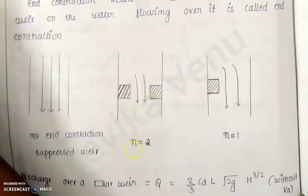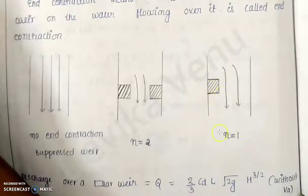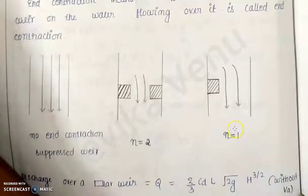We take the N term: for the two-sided case, N is equal to 2, because there are two sides. For the one-sided case, N is equal to 1. We will now see how to include that in the discharge equation.